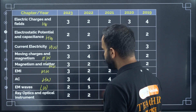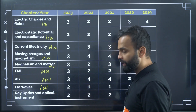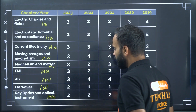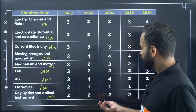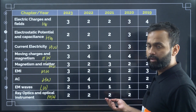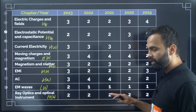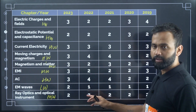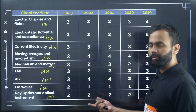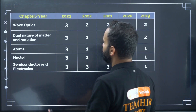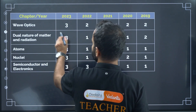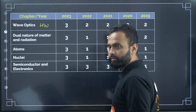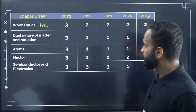Ray Optics and Optical Instruments is a moderate weightage chapter — last five years they asked only two questions every year. Wave Optics is a high weightage chapter; they ask minimum two to three questions from this chapter.